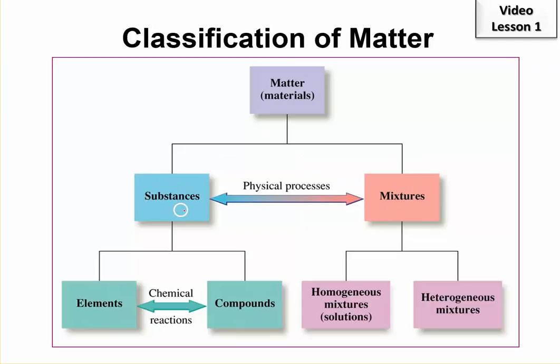And then the pure substances, which by the way, that's kind of redundant because to a chemist, a substance is pure. But anyway, the pure substances are either elements or compounds. The mixtures can either be homogeneous or heterogeneous. We'll get into those. Let's look at these.